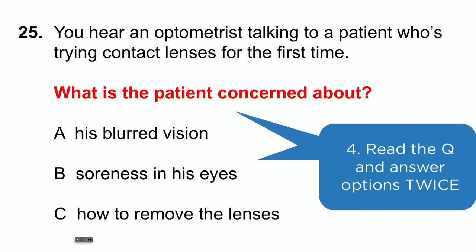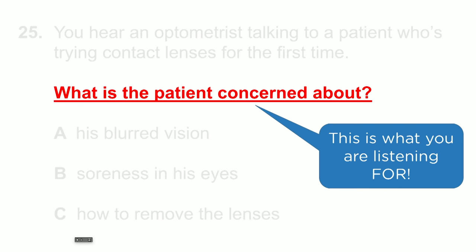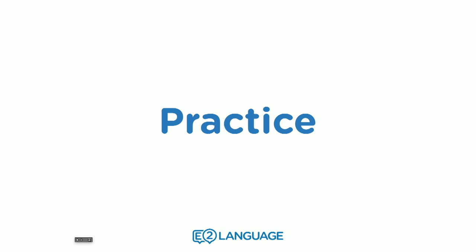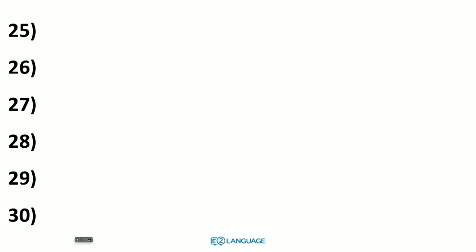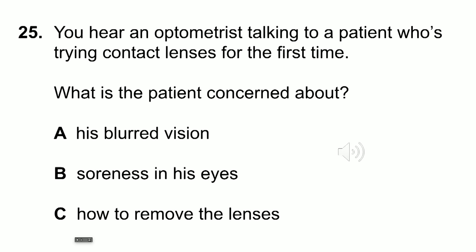So this is how we approach it — it's fast, it's messy, so let's put it into some practice. On a piece of paper, I want you to write down 25 to 30, and you're going to write A, B, or C next to these numbers. Let's get started.